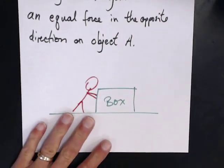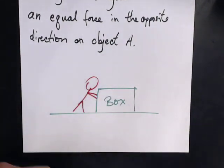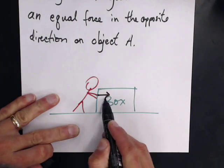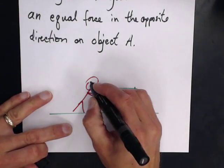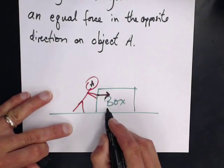So here we have a person and they're pushing a box. They want to push the box that way, so they exert a force on the box. Here's object A, and there's object B.